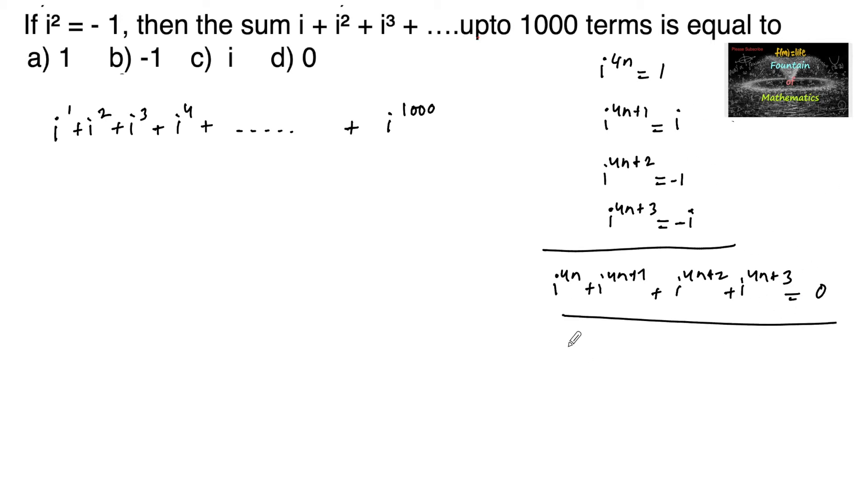So we can conclude that the sum of any 4 consecutive powers of i is 0.